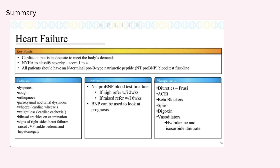Or it can also be right ventricular heart failure, which presents more with systemic symptoms of the rest of the body. For example, peripheral oedema in the ankles or sacral oedema, ascites, pulmonary stenosis, as well as other symptoms such as anorexia, nausea and vomiting, facial engorgement, and epistaxis.